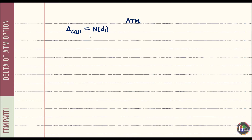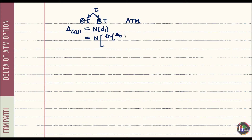Let's expand this and put in the value of d1. So d1 is: N of [ ln(S_t / K) + (r + σ²/2)·τ ] divided by σ√τ, where S_t is the current stock price, K is the strike, and τ is the residual time to maturity.